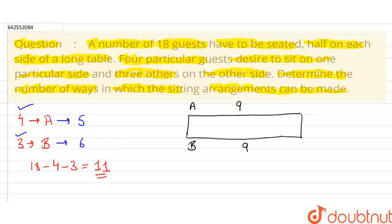So, first of all, let us arrange these 5 people on the side A. So, we can from this 11 people, we can select 5 people to sit on the side A. Now, from the remaining 6 people, we can select 6 people, that is 6C6, which can be seated on the side B.